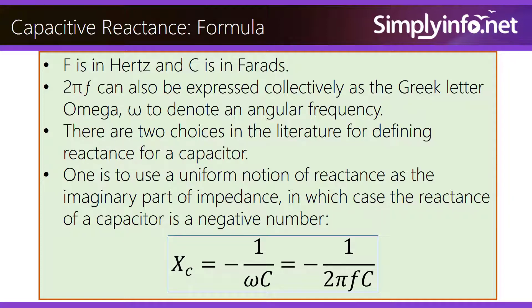One is to use a uniform notion of reactance as the imaginary part of impedance, in which case the reactance of a capacitor is a negative number: Xc equals negative 1 by ωC equals negative 1 by 2πfC.